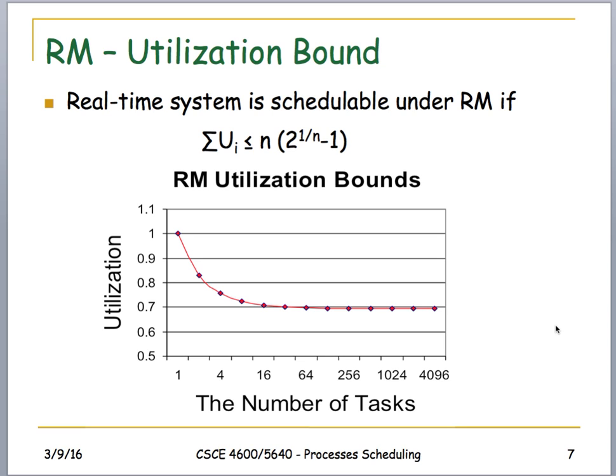A graph of utilization versus number of tasks shows that as the task count grows, the utilization bound converges on a particular limiting value, illustrating how schedulability tightens with more tasks.